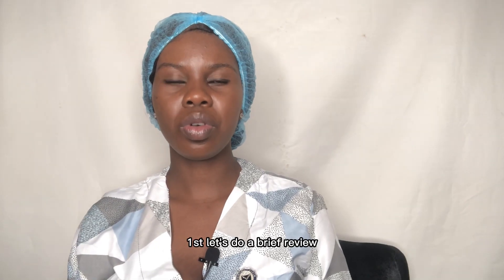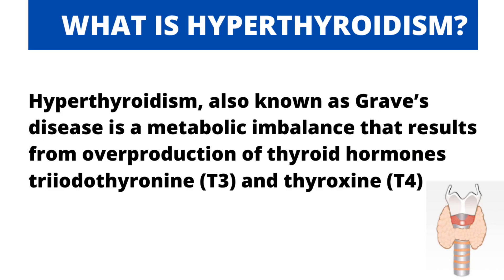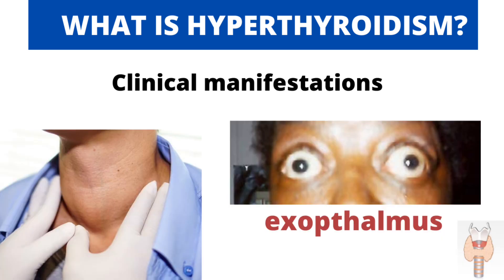First let's do a brief review of what hyperthyroidism is. Hyperthyroidism, which is also known as Graves' disease, is a metabolic imbalance which results from overproduction of two of the thyroid hormones: triiodothyronine (T3) and thyroxine (T4). Actually, there are three hormones produced by the thyroid gland — T3, T4, and calcitonin — but hyperthyroidism occurs when T3 and T4 are overproduced.